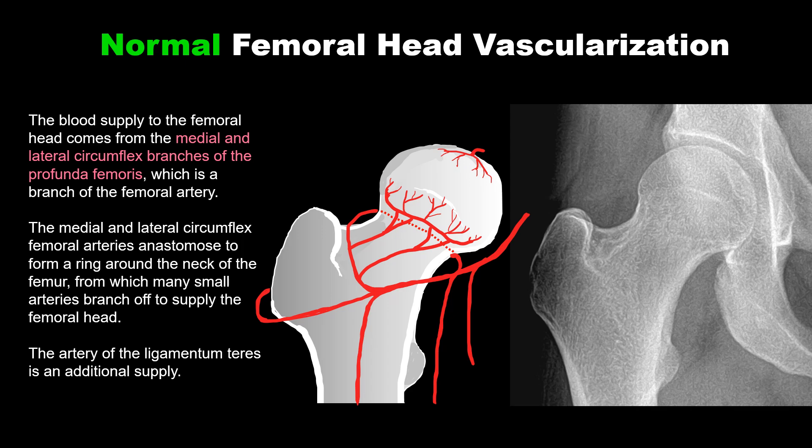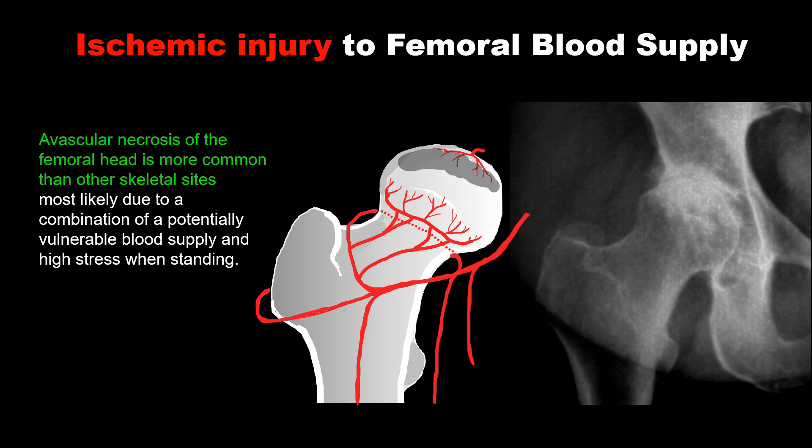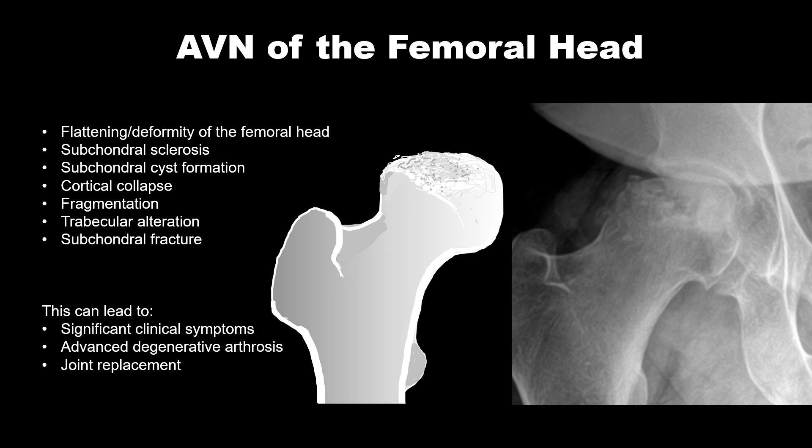The artery of the ligamentum teres provides additional blood supply. An ischemic injury to the blood supply of the femoral head will cause avascular necrosis. This is particularly common in the femoral head, most likely due to its potentially vulnerable blood supply combined with high stress when standing. As osseous cells die, there is flattening and deformity of the femoral head, subchondral sclerosis, cyst formation, cortical collapse, possible osseous fragmentation, alteration in trabecular markings, subchondral fracture, severe clinical symptoms, advanced degenerative arthrosis, and ultimately joint replacement.